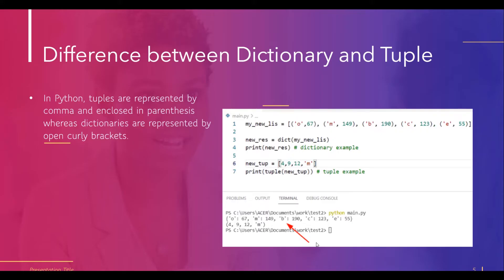Now we will discuss the main difference between dictionaries and tuples. In Python, tuples are represented by commas enclosed in parentheses, whereas dictionaries are represented by curly brackets. Tuples are immutable, which means you cannot change an existing element. A Python dictionary is an unordered collection of data containing elements in the form of key-value pairs, whereas a tuple is an ordered collection of simple characters or integers represented by commas.